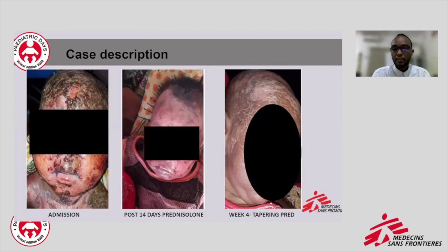Three pictures show the child's condition from the time of admission and after starting treatment. The first picture on the left shows the child's condition on admission with ill-defined irregular-shaped erosions. The middle picture shows the child after 14 days on systemic steroids and antibiotics with local wound care. The third picture shows the child after four weeks, with tapering of prednisolone alone.